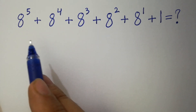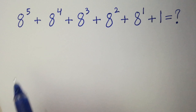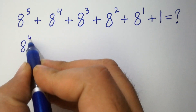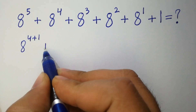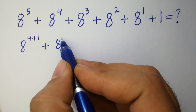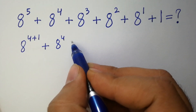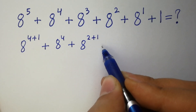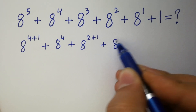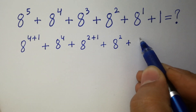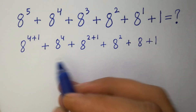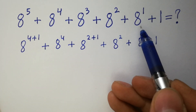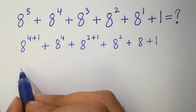This question is the same as 8 to the power 4 plus 1, plus 8 to the power 4 plus 8 to the power 2 plus 1, plus 8 to the power 2 plus 8 plus 1. Since 4 plus 1 is 5, 2 plus 1 is 3, and 8 to the power 1 is 8.